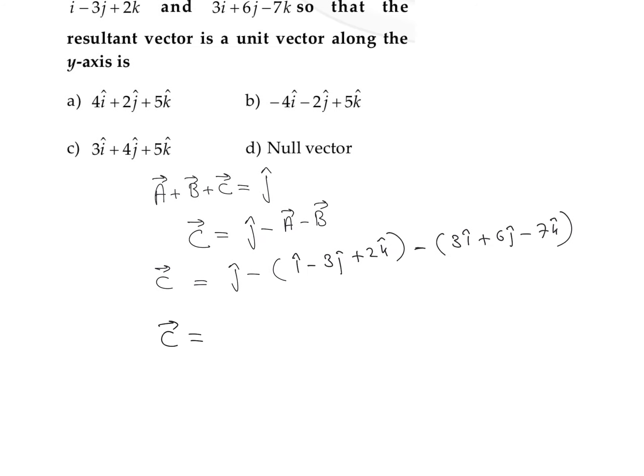So we can write the C vector as equal to j cap minus i cap plus 3j cap and minus 2k cap, minus 3i cap minus 6j cap plus 7k cap.